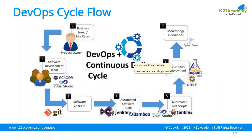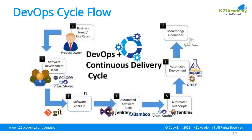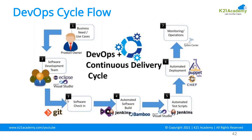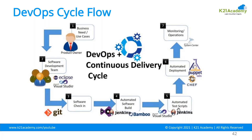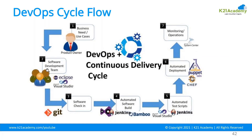Once performance testing confirms everything is running fine with no excessive load, it is released to production. For each stage you have different tools — this is your DevOps cycle. The product or pre-sales team gets the requirements and passes them to the development team, who create code using tools like Eclipse or Visual Studio. They work offline using Git, push to GitHub, and from there Jenkins or Bamboo can do a build, followed by testing, and deployment using Docker, Kubernetes, Chef, or Puppet.